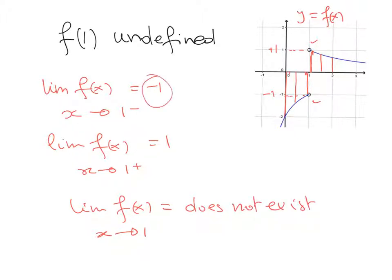Because the two one-sided limits — from the left and from the right — are different, the overall limit of f(x) as x approaches 1 does not exist.